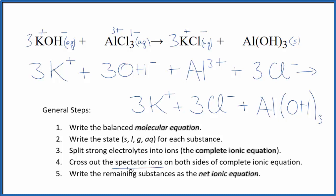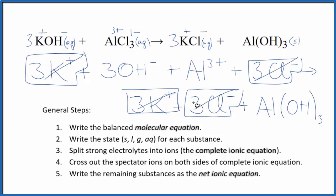Now we can cross out spectator ions. They're on both sides of the complete ionic equation. They haven't changed, so we're not interested in them. In the reactants, I can see I have three potassium ions. In the products, I also have three. Get rid of those. Three chloride ions here, and then in the products, three chloride ions. We can get rid of those.